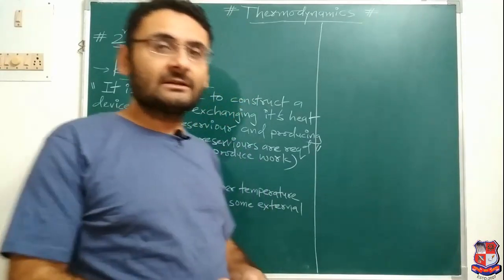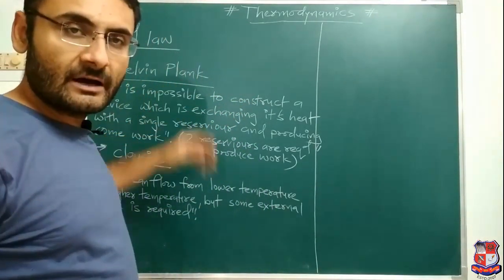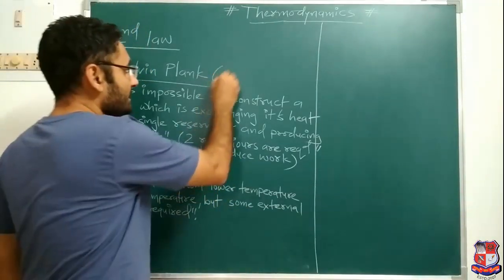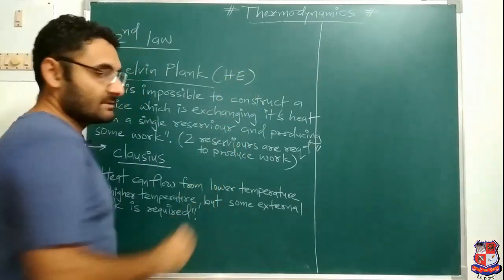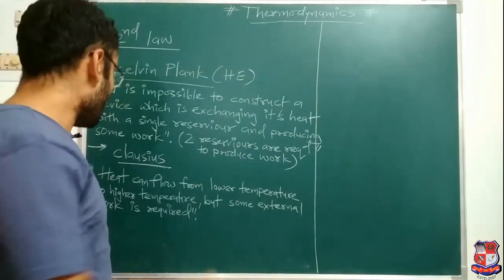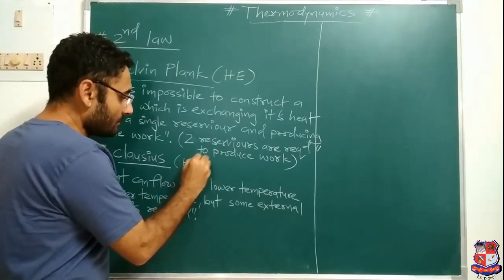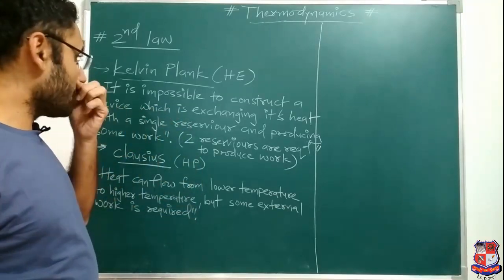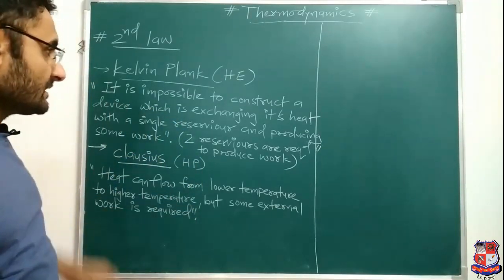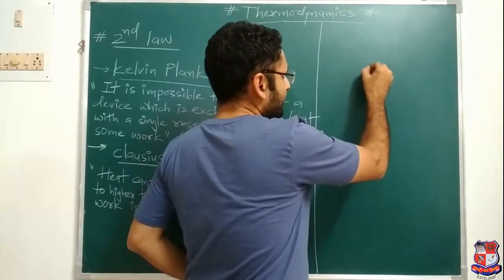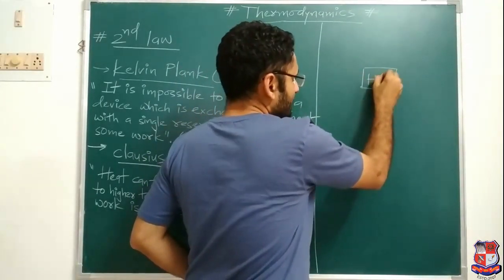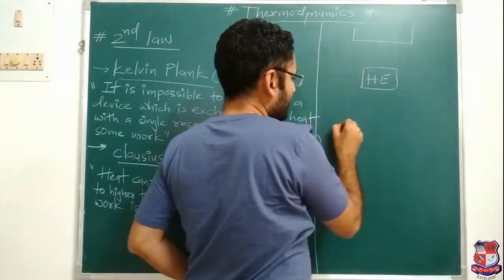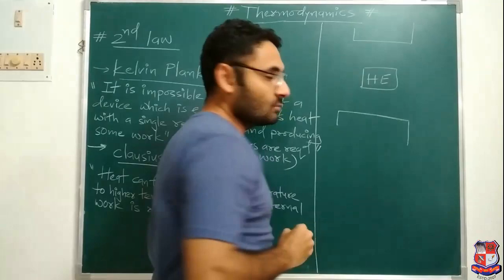First we will understand the statement given by Kelvin-Planck. Kelvin-Planck took the heat engine — I will write HE, which represents heat engine. Clausius took one heat pump — HP means heat pump. For the Kelvin-Planck statement, I will take one heat engine. That heat engine is present between two reservoirs.